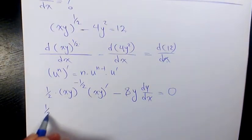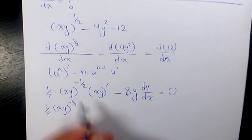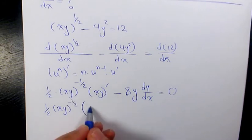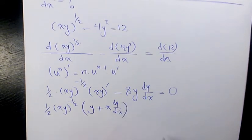Now one half xy to the power of negative one half, derivative of xy, we need to use product rule. Derivative of x is 1 times y, plus x times derivative of y, which is dy over dx, minus 8y dy over dx equals 0.